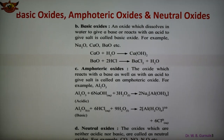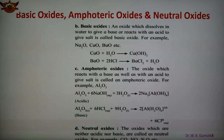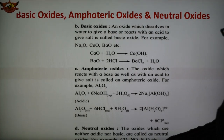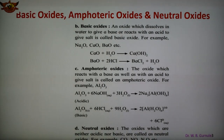Neutral oxides are those which are neither acidic nor basic. Examples are carbonyl CO, nitrosyl NO, and N2O nitrogen oxide. So these are examples of neutral oxide. Oxides may be 4 types: acidic, basic, amphoteric, and neutral.